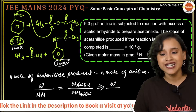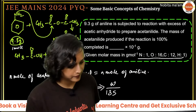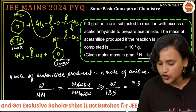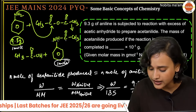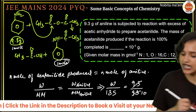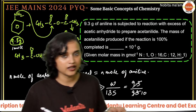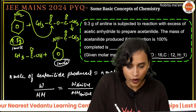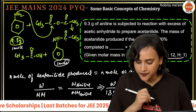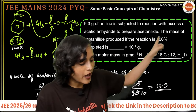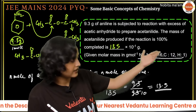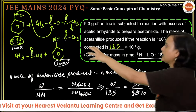Given mass of aniline = 9.3 g. Molar mass of aniline = 93 g/mol. So: weight of acetanilide / 135 = 9.3 / 93. The 9.3/93 simplifies to 1/10. Therefore weight of acetanilide = 135/10 = 13.5 g = 135 × 10⁻¹ g. The answer is 135.